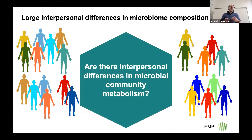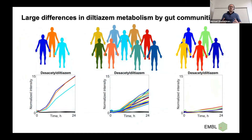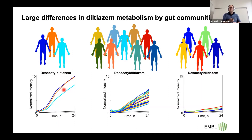Another important feature of the microbiome is the fact that there are very strong interpersonal differences in microbiome composition, which triggers the question: does this also translate into interpersonal differences in microbial community metabolism? When we use drug metabolism as a proxy for metabolic readout for microbial communities — showing here data for 28 human gut communities and their metabolism of a calcium channel blocker, diltiazem — you can clearly see that we can distinguish fast, intermediate, and slow metabolizing gut communities.